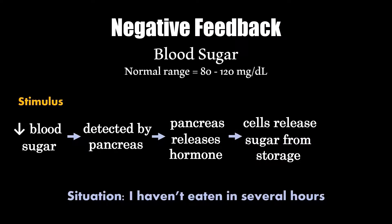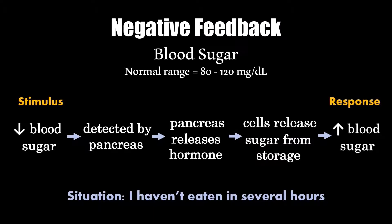That hormone instructs cells throughout my body to break down carbohydrates and release it as sugar into my bloodstream. As a result, my blood sugar is going to rise to be within the normal range, and once it's in the normal range, that is going to cancel out the initial stimulus and end this entire process.